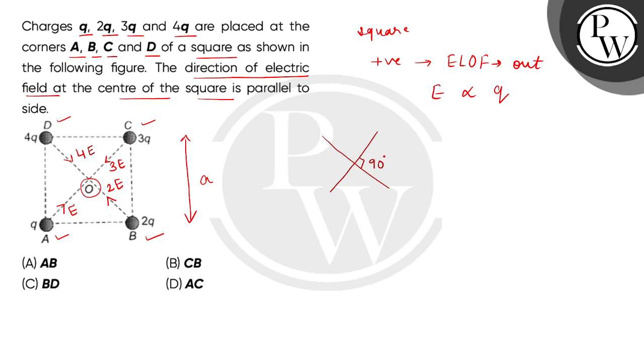So now here, for diagonal AC, the net electric field will be along the direction of CA and its magnitude will be 2E. And the diagonal DB will be along the direction of DB and its magnitude will be 2E.